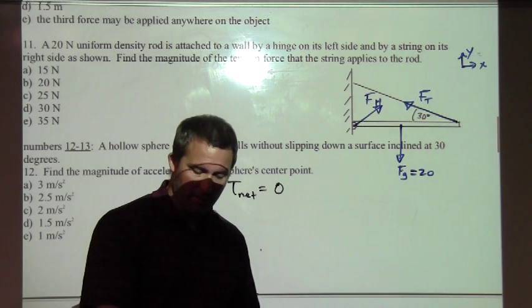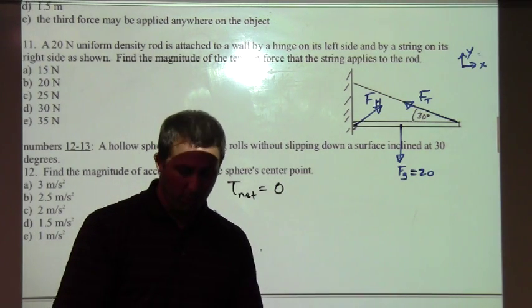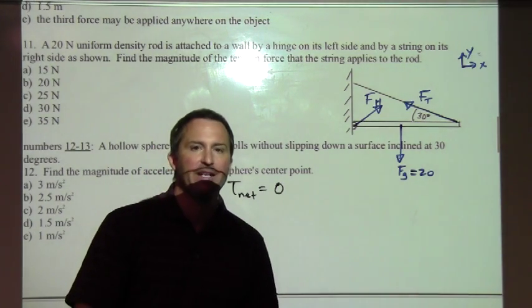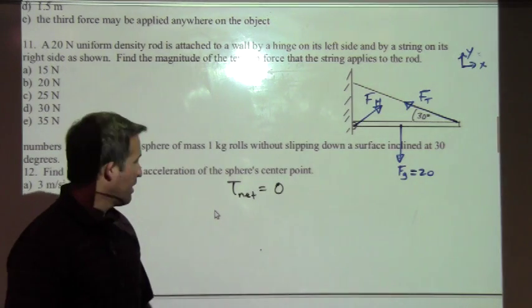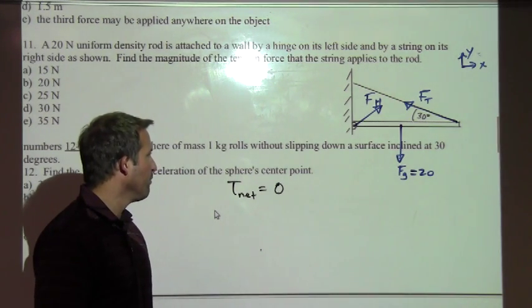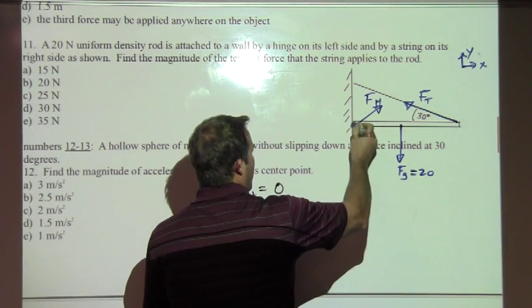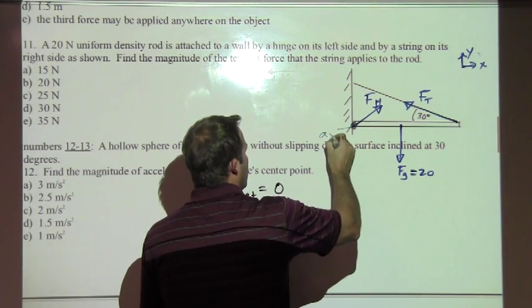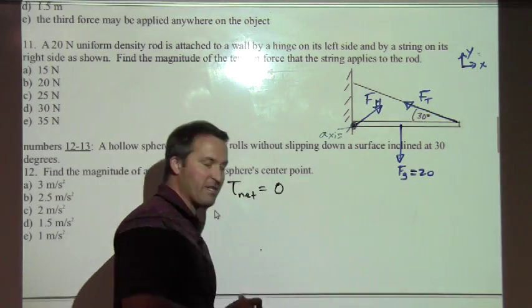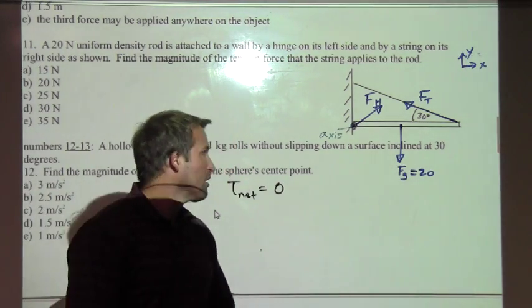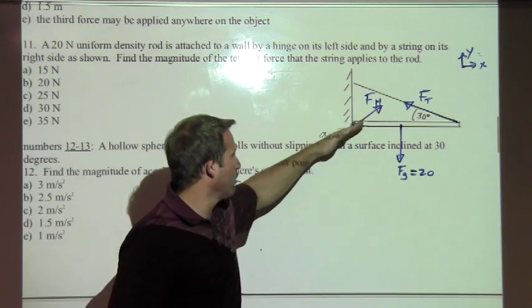And we know that in order to calculate any torque, there has to be a specified axis point. So here's where we can work things out. If we choose this as our axis point right here at the hinge, that's going to help us out quite a bit because what's the lever arm distance going to be for the hinge force?